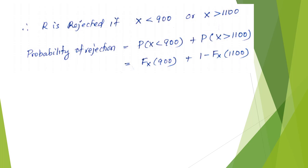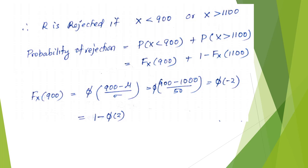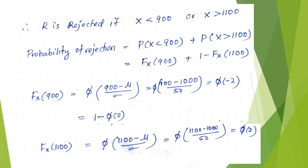To find F_X(900): z = (900 - 1000) / 50 = -100/50 = -2, so F_X(900) = phi(-2) = 1 - phi(2). To find F_X(1100): z = (1100 - 1000) / 50 = 100/50 = 2, so F_X(1100) = phi(2). From the standard normal table, phi(2) = phi(2.00) = 0.9772.